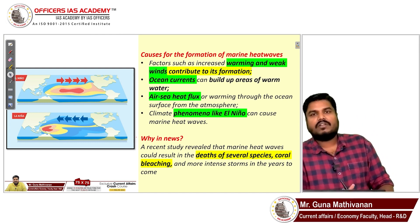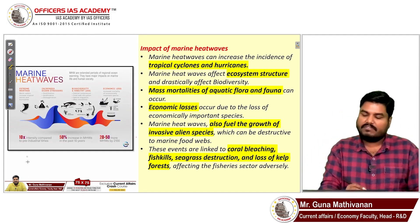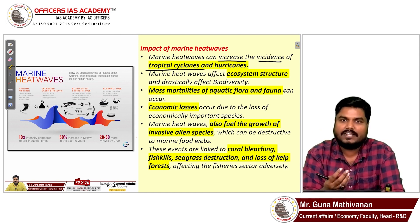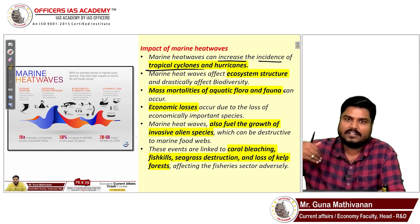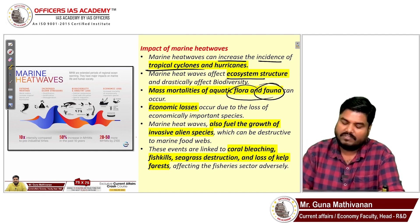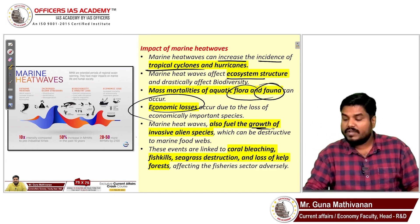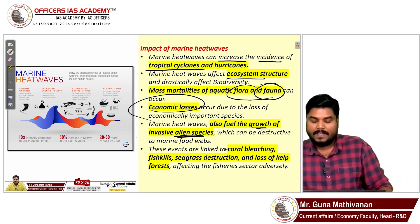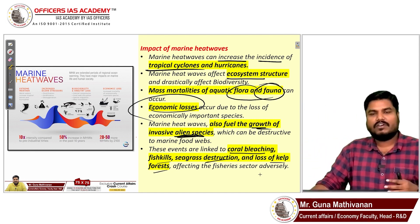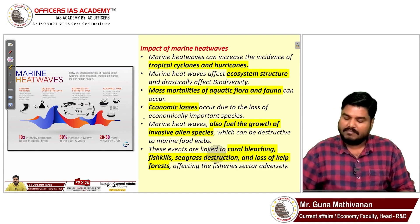The consequences of marine heat waves include: loss of biodiversity, coral bleaching, and increased incidence of tropical cyclones — since cyclone formation requires at least 27°C of sea surface temperature, warmer oceans fuel more frequent cyclones. Ecosystems are disrupted, aquatic flora and fauna die off, causing livelihood and economic losses. Higher temperatures also fuel the growth of alien invasive species, further threatening biodiversity. Other specific impacts include fish kills, sea grass destruction, and loss of kelp forests — the underwater forests formed by algae on the ocean floor.